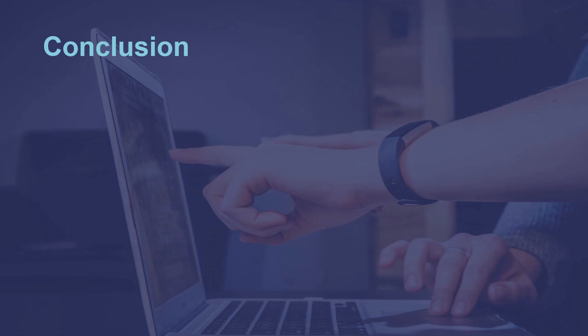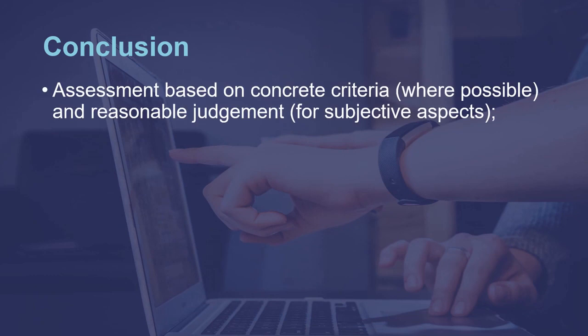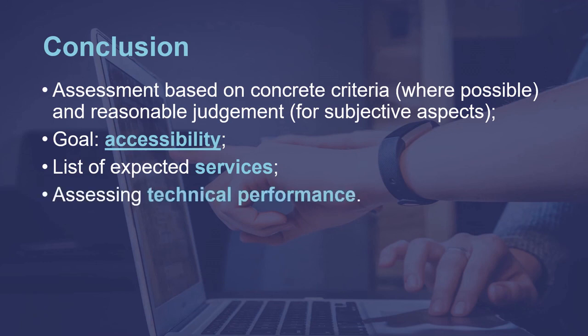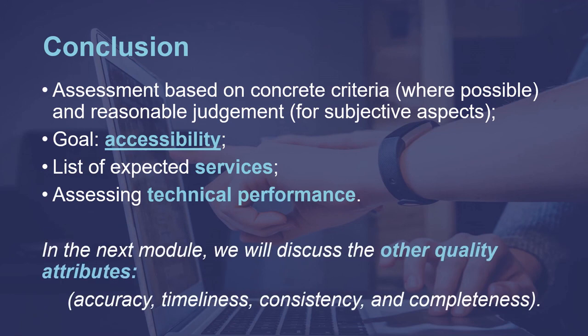In this module, we have discussed how to evaluate, using both concrete criteria and reasonable judgment, TIP services that help users find the content they are looking for. The list of services we have discussed here should be treated as a baseline, not as a mandatory or comprehensive list. We also showed simple ways to assess the technical performance of a TIP even from outside of its organization. This can again be used to understand a TIP's position relative to other TIPs and generate ideas for further improvement. In the next module, we will discuss how to improve other key quality attributes of the content, namely accuracy, timeliness, consistency and completeness of TIPs.